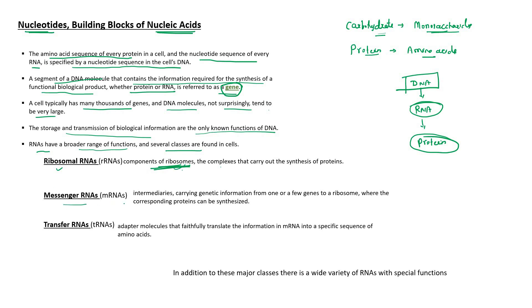The second class is messenger RNA. Messenger RNA is the intermediary carrying genetic information from one or a few genes to a ribosome, where the corresponding proteins can be synthesized.